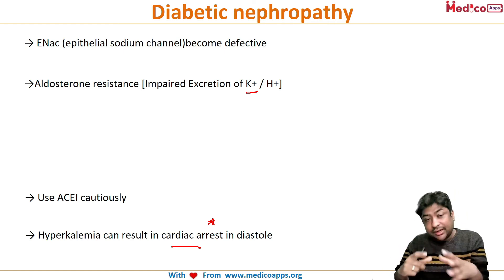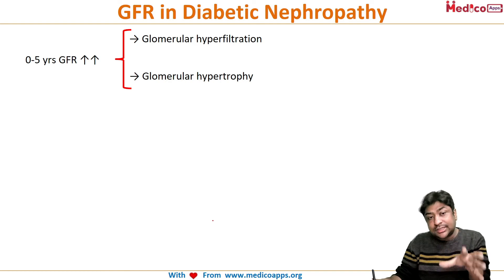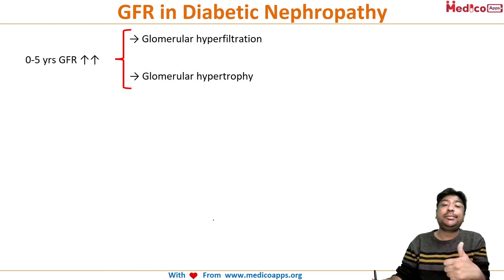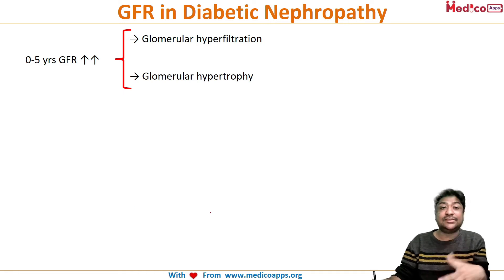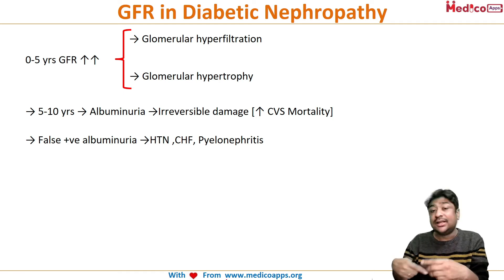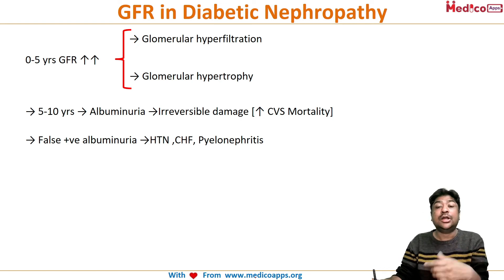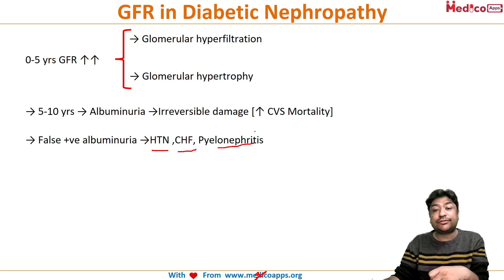Regarding disease progression: in the first five years there is glomerular hyperfiltration and hypertrophy — a paradoxical increase in GFR. After five to ten years, albuminuria develops due to irreversible damage, coinciding with increased cardiovascular mortality. When evaluating albuminuria, always rule out false positive causes such as hypertension, congestive heart failure, and pyelonephritis.